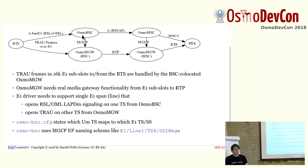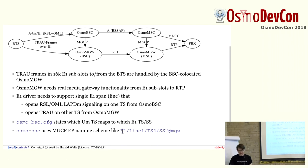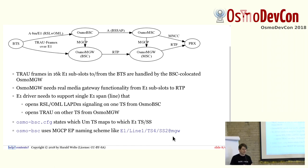This will also affect the MGCP signaling, because if you paid attention to Philip's talk earlier, right now we have 'RTP bridge slash something' as an endpoint name, because we have RTP on both the left and right-hand side. Now OsmoBSC needs to use an endpoint name which encodes the line number, the time slot number, and the sub-slot number — something like E1/line1/TS4/sub-slot2 at MGW. So the endpoint name would differ from a pure RTP IP-based BTS setup, but the endpoint name has to change.